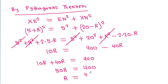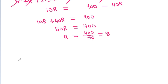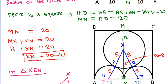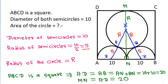Solving this, r will be equal to 400 divided by 50, that is 8. So r equals 8. Therefore, the area of the circle will be equal to π r squared, that is π times 8 squared, which is π times 64, that is 64π.